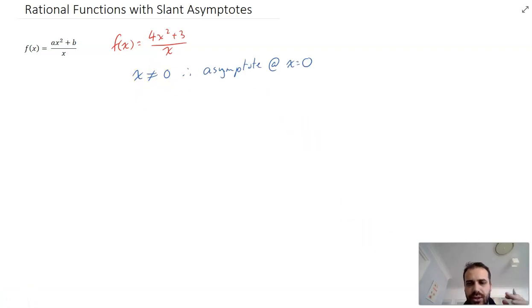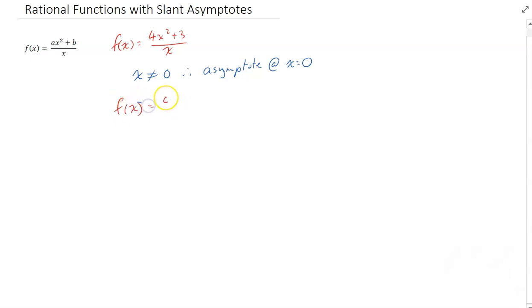Now what about that weird slant asymptote? Well let's take a look at this function. We can take this function and split it up into two separate sections. So we can say f of x is equal to 4x squared over x plus 3 over x. And now we can simplify this to be 4x, because 4x squared over x is 4x, plus 3 over x.